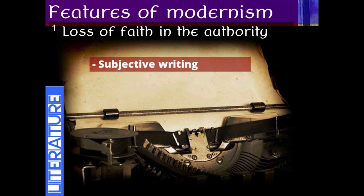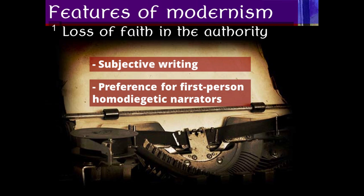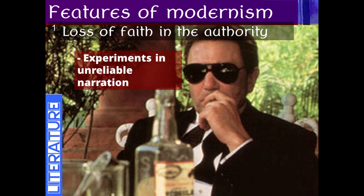This was replaced mainly by subjective writing rooted in the individual — whose emotions, memories, and sufferings became central to the novel. The novel was less about the collectivity, more about the individual. The immediate consequence was a preference for first-person homodiegetic narrators — narrators who are participants in the story. There were also experiments in unreliable narration: narrators who no longer claim complete knowledge of everything going on.